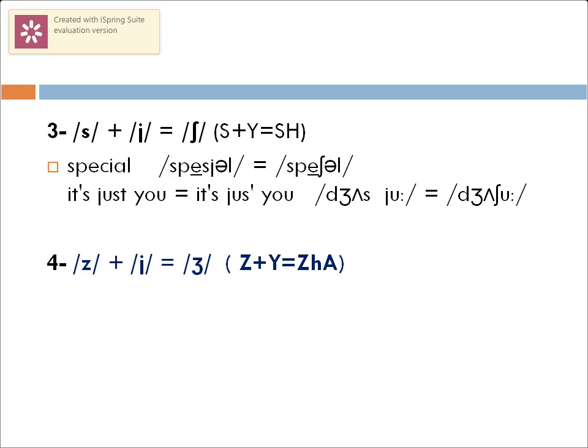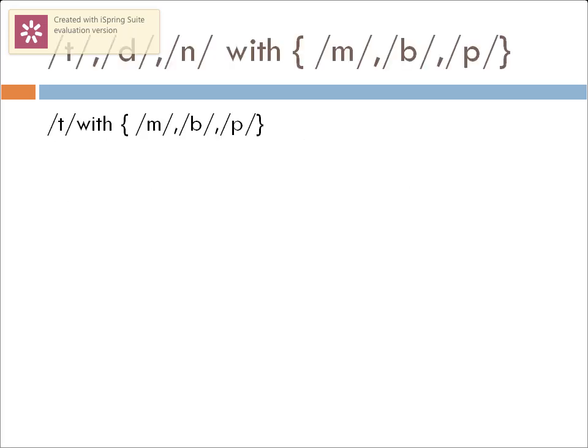Finally, there is the case of /z/ combining with /j/ in the word 'treasure,' where we get the new consonant sound /ʒ/. It's not 'trea-sure' but 'treasure.'